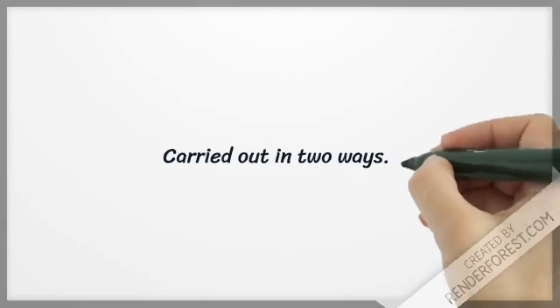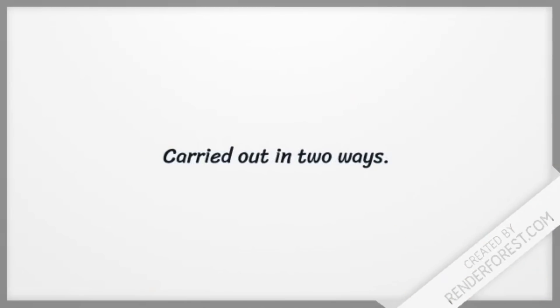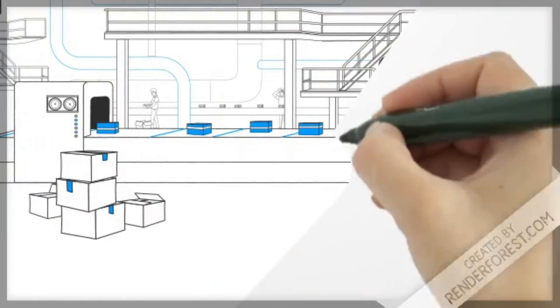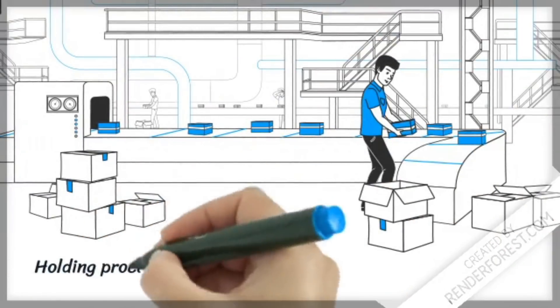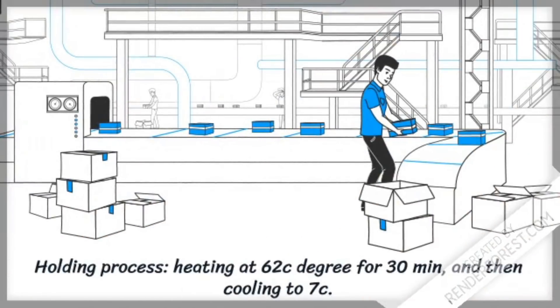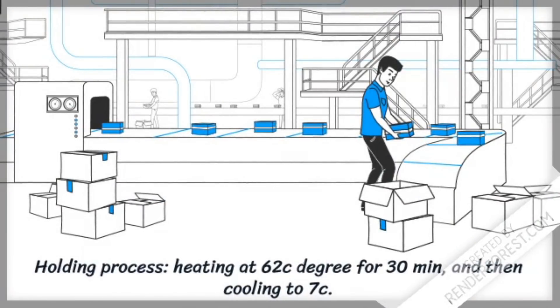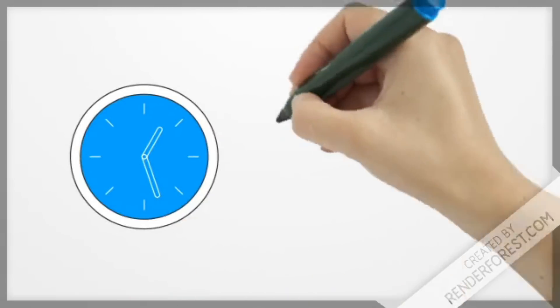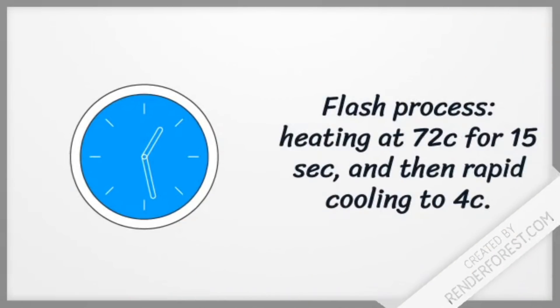It is used in two ways. The first is holding process: heated to a temperature of 62 Celsius for 30 minutes and then cooled to 7 Celsius. The second method is flash process: heating at a temperature of 72 Celsius for 15 minutes and then a quick cooling to 4 Celsius.